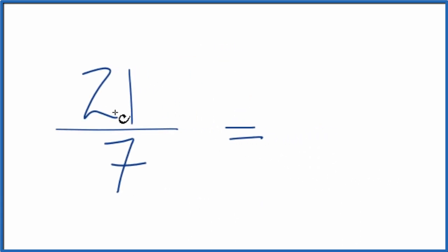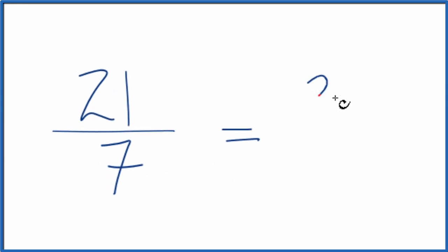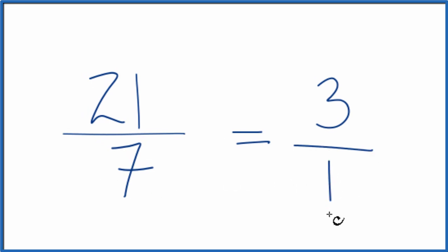21 divided by 7 is 3. 7 divided by 7, that's 1. So let's try that. 21 divided by 7, that's 3. 7 divided by 7, that's 1.